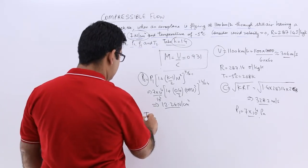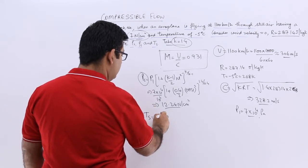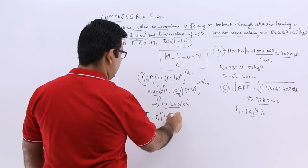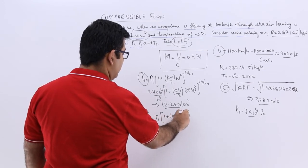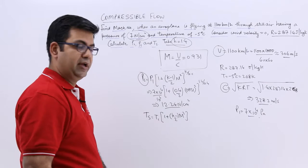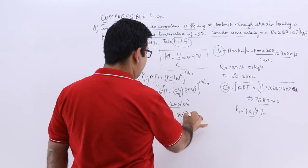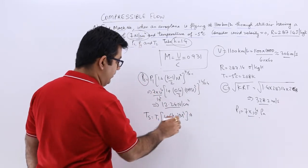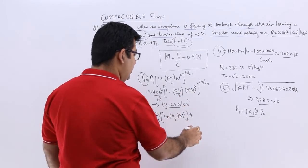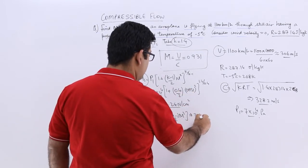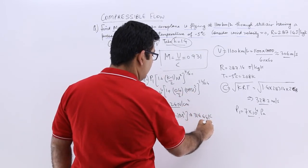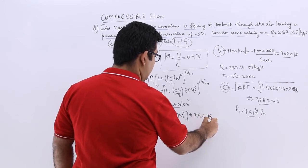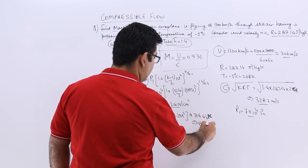Then TS is T1 into 1 plus k minus 1 by 2 into Mach square. When you put in the values over here, you get the value in Kelvin. Remember because this would be in Kelvin 268, it would be 314.44 Kelvin. So this in degree would be 41.44 degree Celsius.